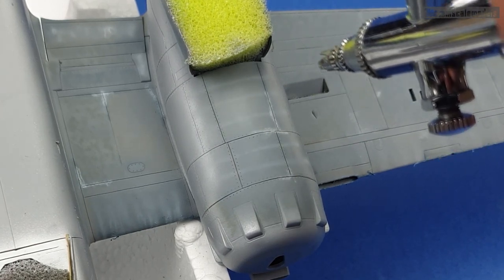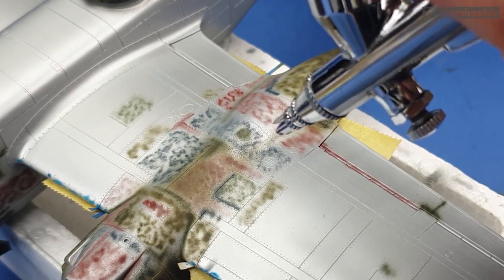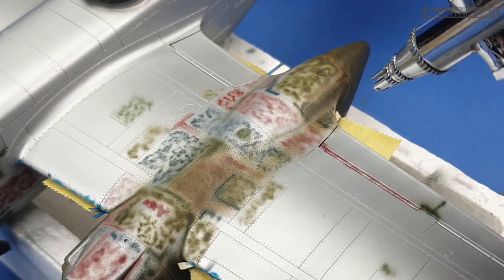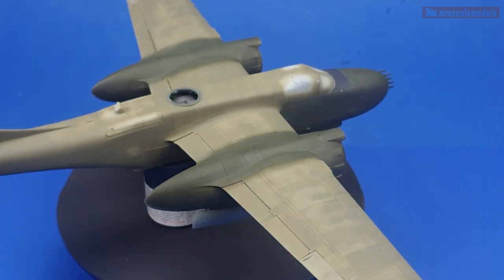In the previous episode we painted the camouflage of the invader. Today we are going to continue airbrushing, but this time it is going to be the markings that we are going to focus on.